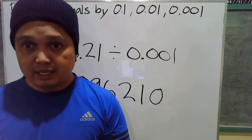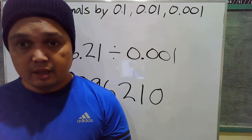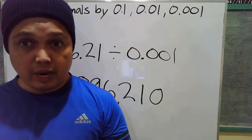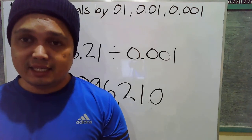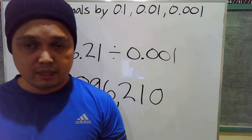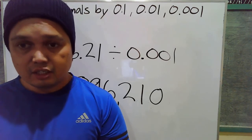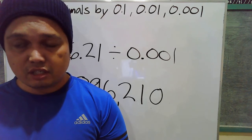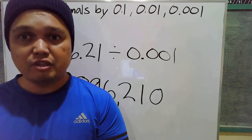Just copy the dividend, then move the decimal point to the right depending on how many digits after the decimal point the divisor has. It's easy! That's it for today's lesson. Thank you for your time — see you next lesson.